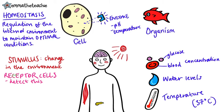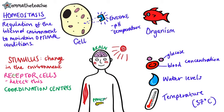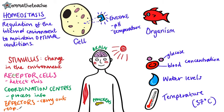Once you've got that information, it needs to be passed on to a coordination centre to be received and processed. Two examples of this are the brain and the pancreas — these decide how to respond. Effectors then actually carry out the response, and they restore the conditions back to the optimal level. The two types you need to know are muscles and glands, such as the pancreas.